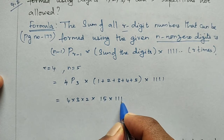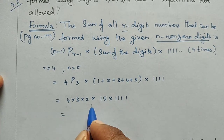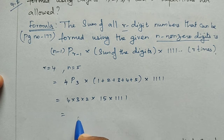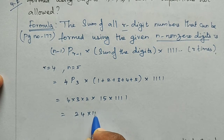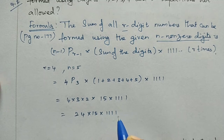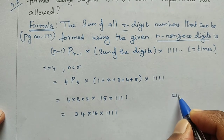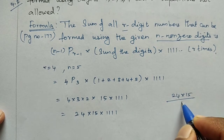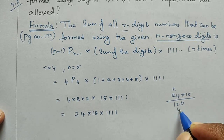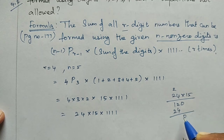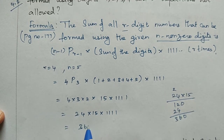So 24 into 15: 4 fives are 20, 2 fives are 10, giving 12 — that is 360. So the expression becomes 360 into 1111.